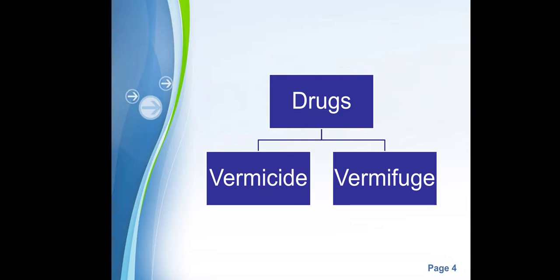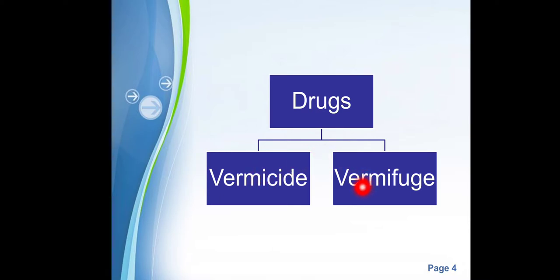Anthelmintic drugs can broadly be divided into two categories: vermicides and vermifuges. Vermicide drugs kill the parasites inside the body, while vermifuges do not kill but expel the organism out of the body. Extra caution is required with vermicides because once organisms are killed inside the body, they may cause certain reactions. Vermifuges simply expel the organism without killing it, but vermicides are definitely more potent.